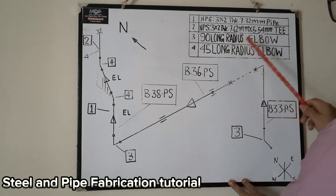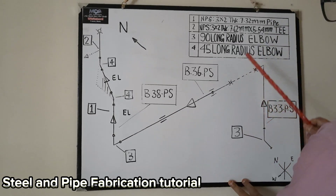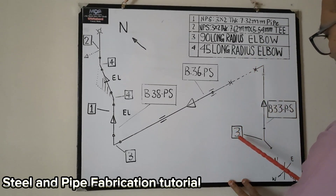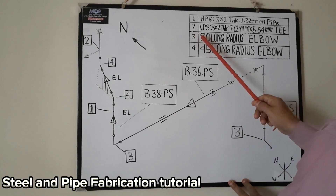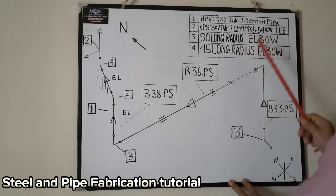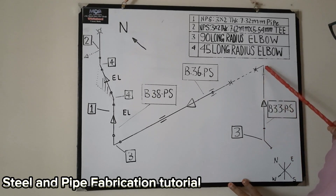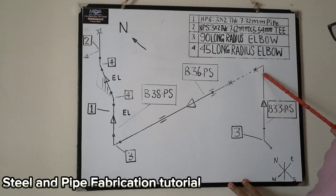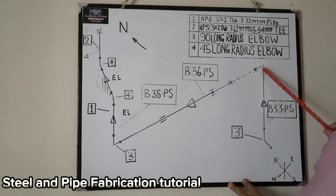Let's follow — this is number three, and here it says 90 long radius elbow. So we get here a 90 long radius elbow, and then from here to here have pipe. Then again here, I forgot to write, here also number three, so here also 90 long radius elbow.